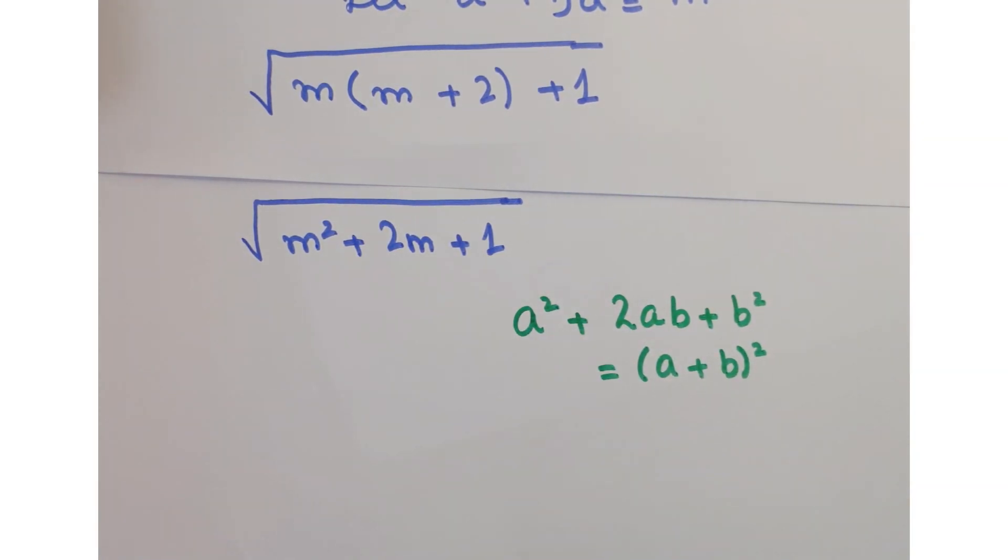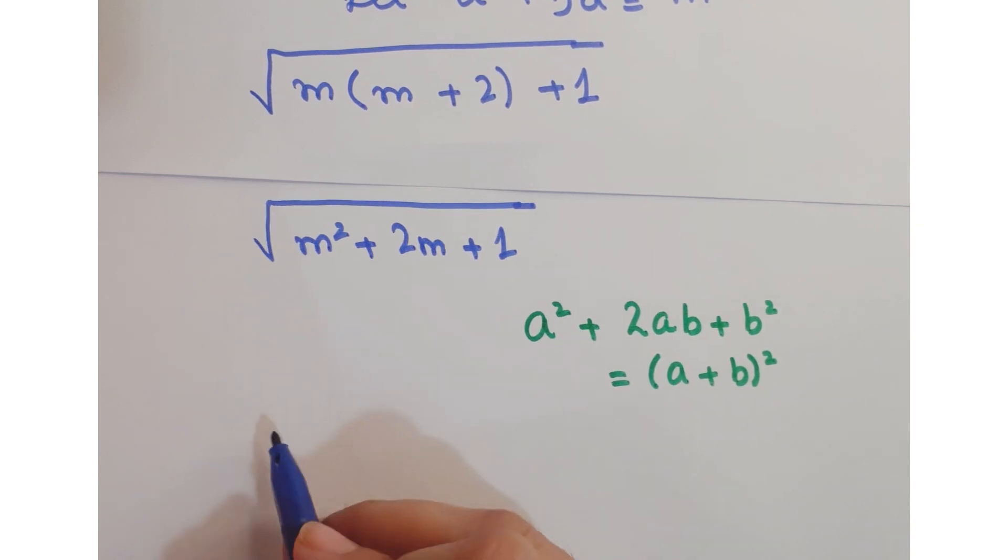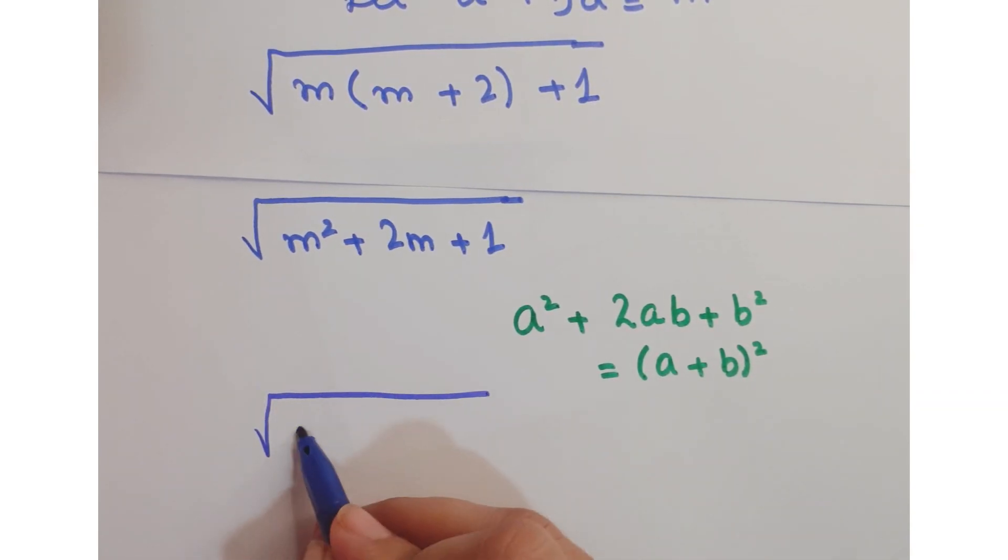So we can replace m squared plus 2m plus 1 as (m plus 1) whole squared.